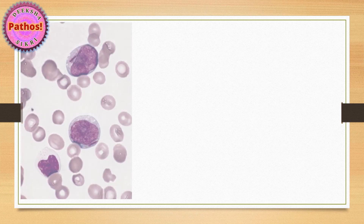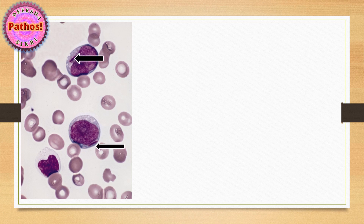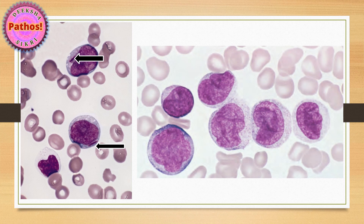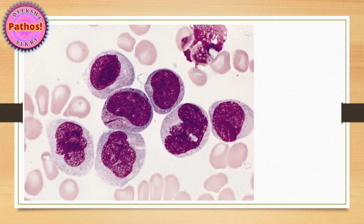The next group of tumors in which you see blasts are acute leukemias. Look at this photograph — you can see two big cells with high NC ratio. In the cytoplasm, you can recognize those classical rod-like structures called Auer rods. So these are myeloblasts. Now look at these cells — again big cells because of the nucleus, high NC ratio. The nucleus looks like it's folded upon itself, almost like kneaded dough. This folded or creased nuclear appearance is very classical of monoblasts.